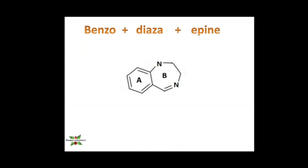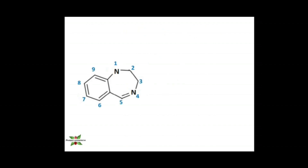In the basic structure of benzodiazepines we have two rings: a benzene ring and a diazepine ring. As the name indicates, 'benzo' means benzene ring, designated as ring A; 'diazepine' means two nitrogen groups, two azo groups; and 'epine' means a seven-membered ring. The positions are numbered one through nine. This basic structure is essential for activity, as benzodiazepines act through GABA receptors, and this structure is required for good receptor binding affinity.